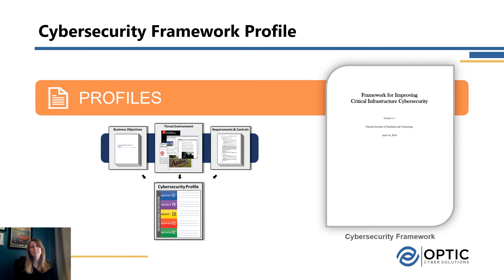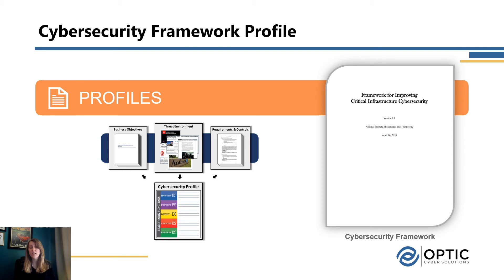Third, we have the profiles — this is where everything gets documented. A profile can take many forms: a Word document, an Excel spreadsheet, or various tools. Essentially, a profile is a way to record what you're doing to meet the core categories and subcategories. It provides a way to look at your business objectives, the threat environment, any compliance constraints or regulatory requirements, and bring all of that into one place, documented centrally.